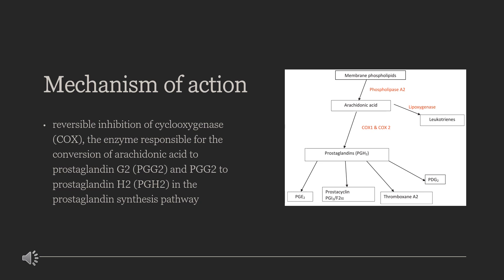The COX-2 enzyme produces prostaglandins that mediate pain, fever, and inflammation, and mediates the desired antipyretic, analgesic, and anti-inflammatory properties of naproxen. Undesired adverse effects such as gastrointestinal upset and renal toxicities are linked to the COX-1 enzyme.